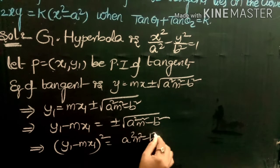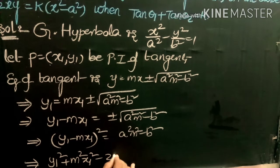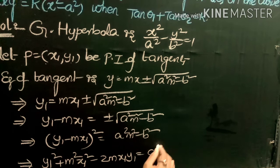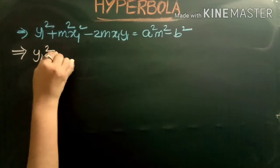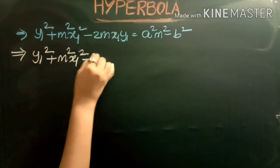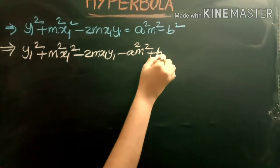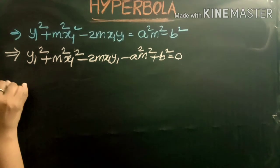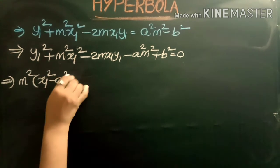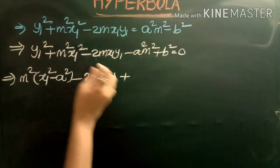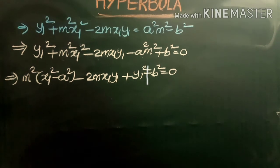Rearranging: y₁ - mx₁ = ±√(a²m² - b²). Squaring both sides: (y₁ - mx₁)² = a²m² - b². Expanding: y₁² + m²x₁² - 2mx₁y₁ = a²m² - b². Rearranging: m²(x₁² - a²) - 2mx₁y₁ + (y₁² + b²) = 0.